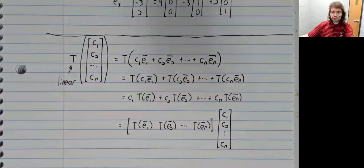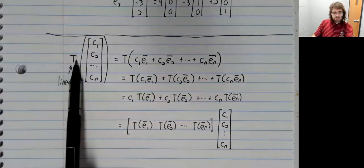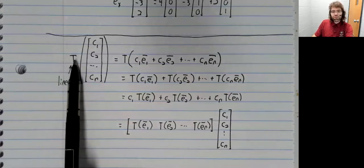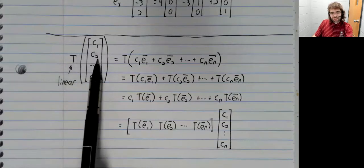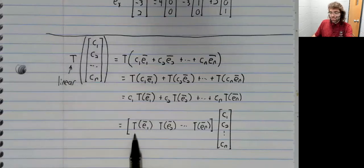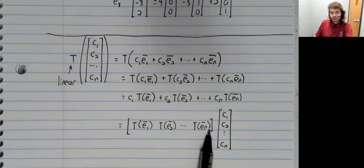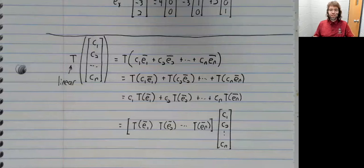What were we trying to prove? That this linear transformation applied to this vector is the same thing as a matrix times the vector. And we have done precisely that.